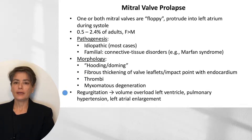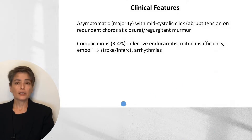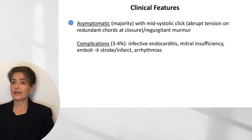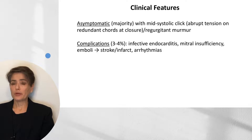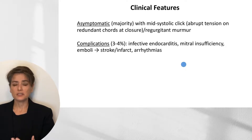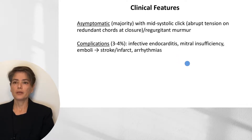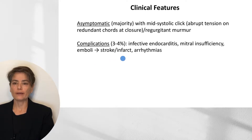Microscopically, we see myxomatous degeneration. Because of this regurgitation, we get volume overload of the left ventricle, which can lead to pulmonary hypertension and left atrial enlargement. Clinically, the majority of individuals are asymptomatic. They can be recognized by a mid-systolic click, due to abrupt tension on the redundant chordae at closure, and a regurgitant murmur. About 3% to 4% develop complications such as infective endocarditis—keep in mind that normal endocardium is resistant to bacterial colonization, but abnormalities set up infection. They can also get mitral insufficiency, emboli leading to stroke or infarct, and arrhythmias.